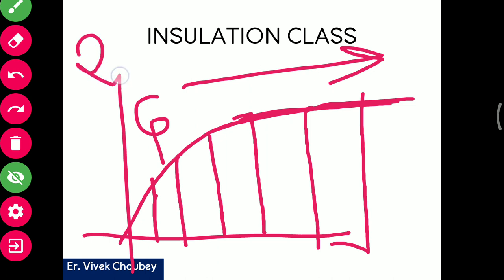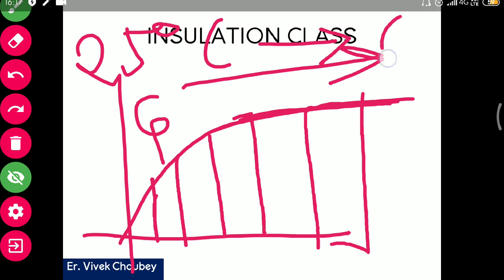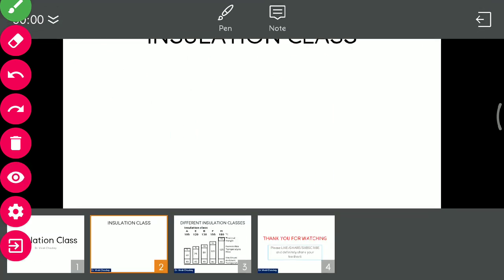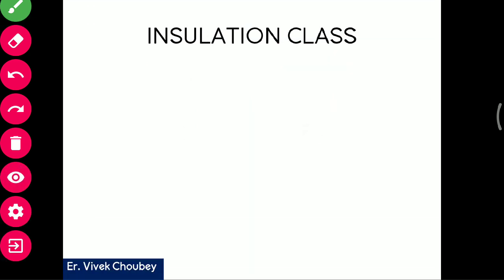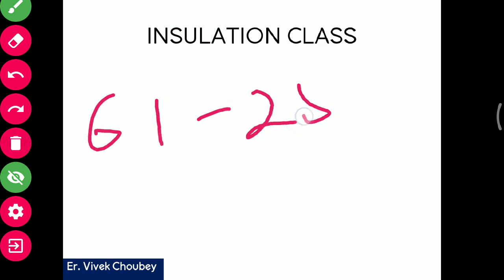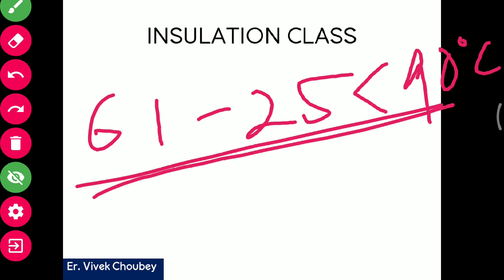When the temperature begins to saturate, we can end the heat run test. For example, if the ambient temperature was 25°C and the transformer saturated at 61°C, the temperature difference is 61 minus 25 = 36°C. Since this is less than 90°C, the insulation of that transformer would be classified as Class F insulation.